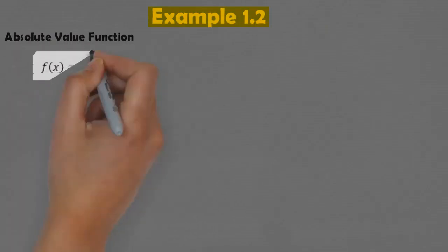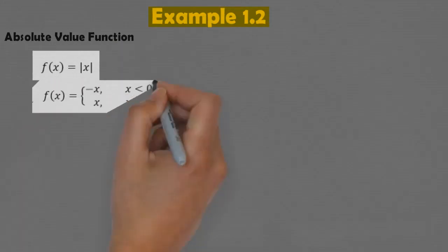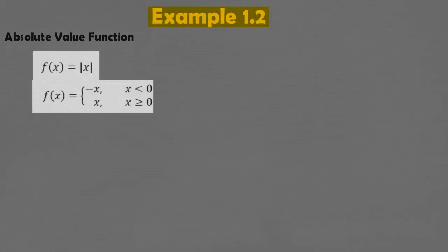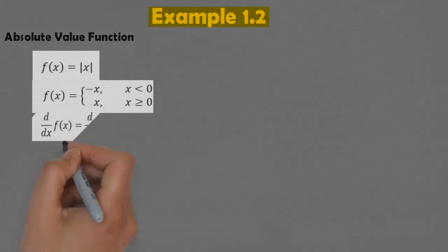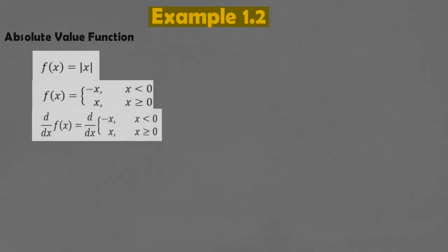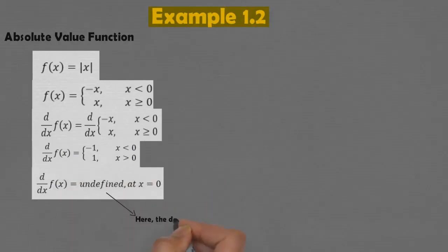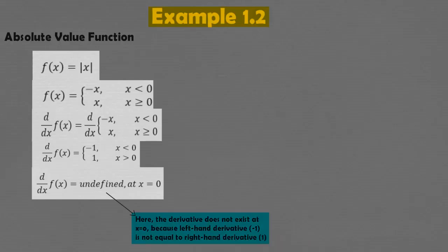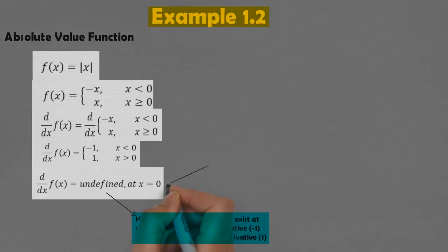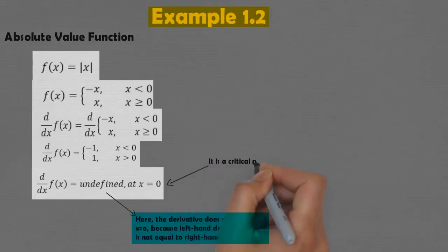Now coming to example 1.2: the function is the absolute value function, so f(x) = |x|, which can also be expressed as f(x) = −x for x < 0, and x for x ≥ 0. Taking its derivative, the derivative comes out to be −1 for x < 0 and 1 for x > 0. The derivative of the absolute value function does not exist at x = 0, because the left-hand derivative, which equals −1, is not equal to the right-hand derivative, which equals 1. Therefore the derivative at x = 0 is undefined, and so x = 0 is a critical point.